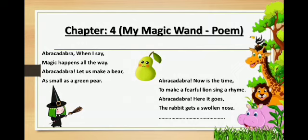Like bear changes into a small green pear. She also wanted that a fearful, strong lion should sing a rhyme, and for that she again spoke those magical words. Meanwhile, she also wished for animals to roam around free and make their life enjoyable. When she waves her wand with magical words, all animals should vanish from the zoo and quickly fly away from there. So this was all there in this poem.